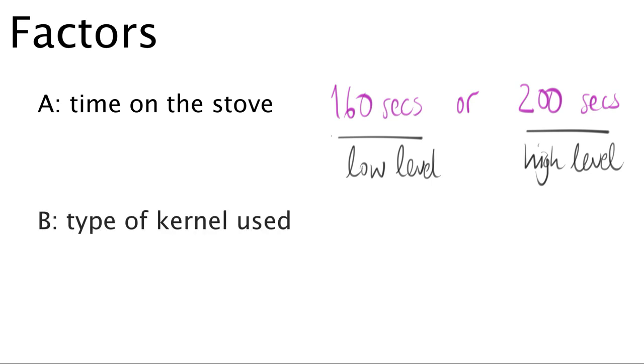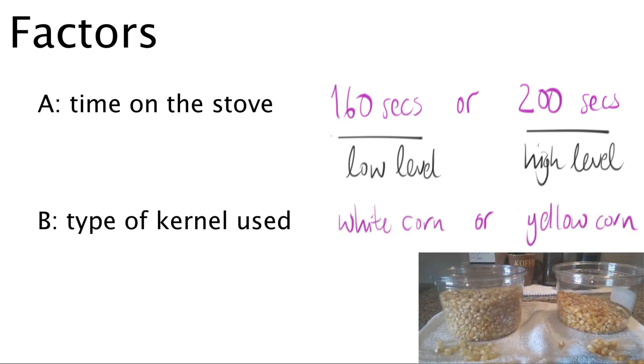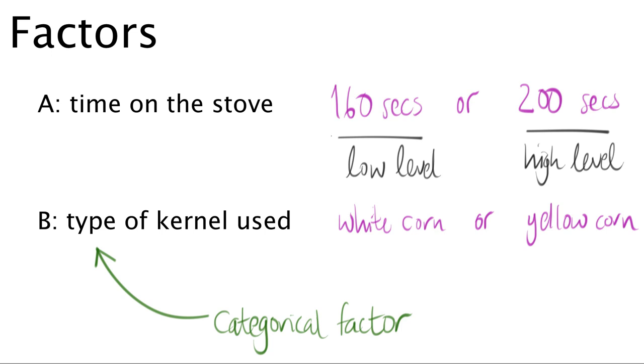The second factor we will consider is the type of popcorn. You could buy either white popcorn or yellow popcorn. Notice that this is a categorical variable and that there are two levels. We will assign the low level for white corn and the high level for yellow corn.